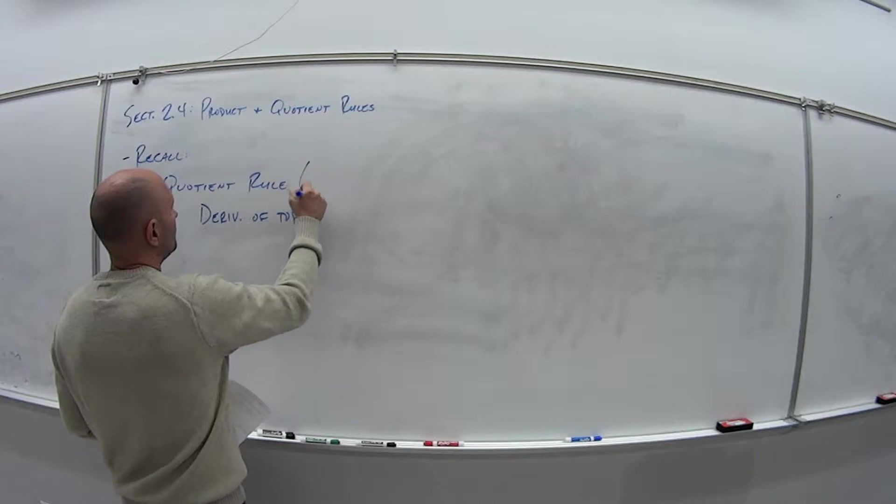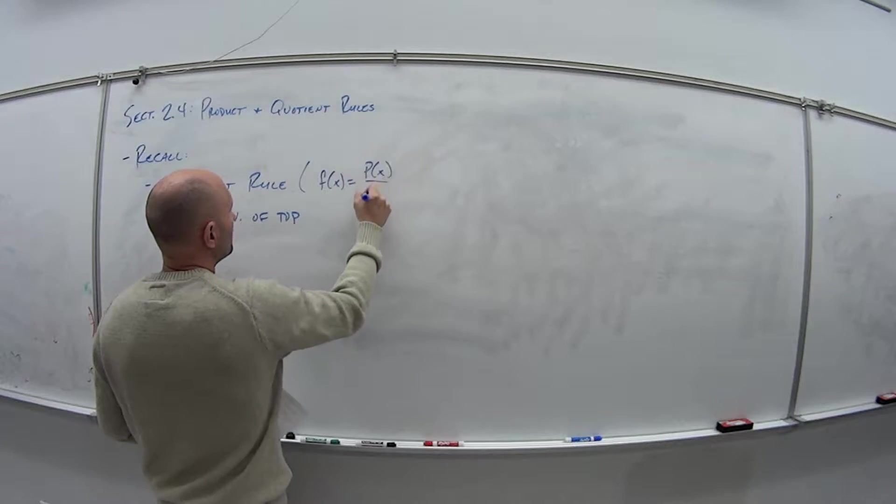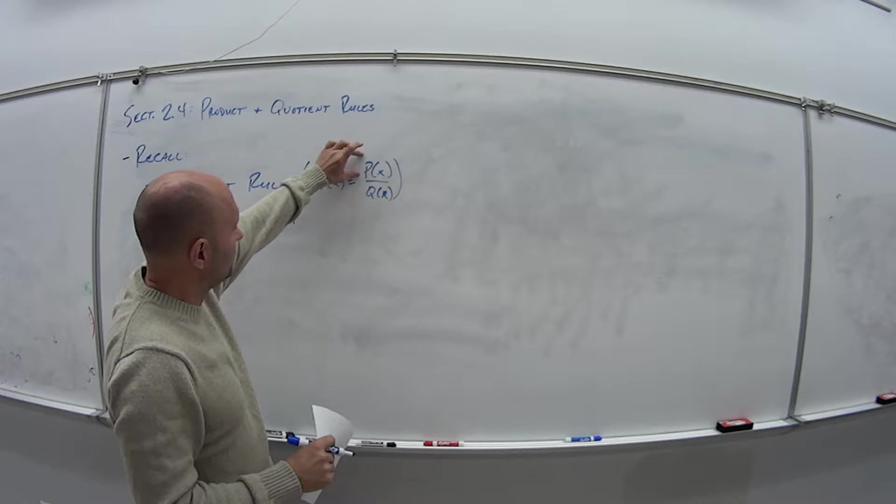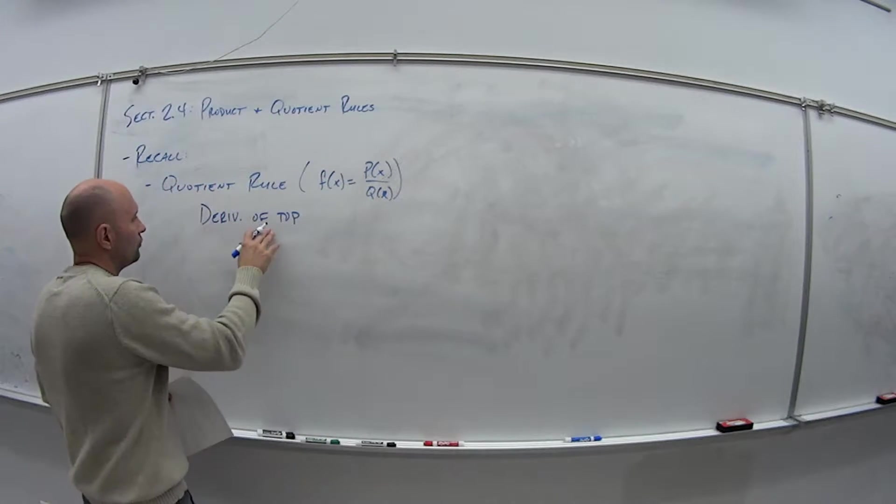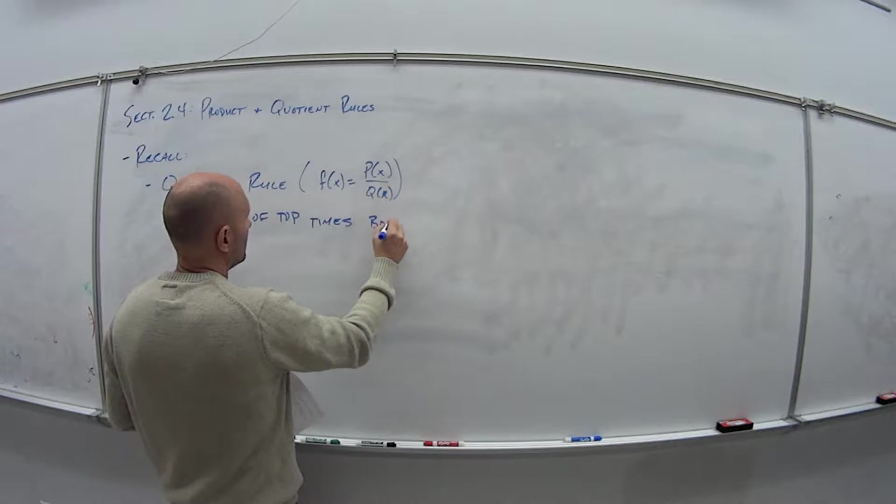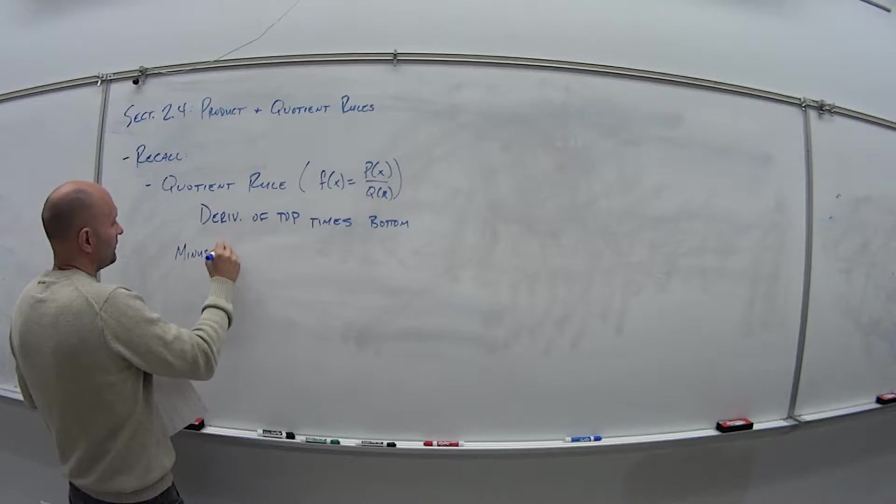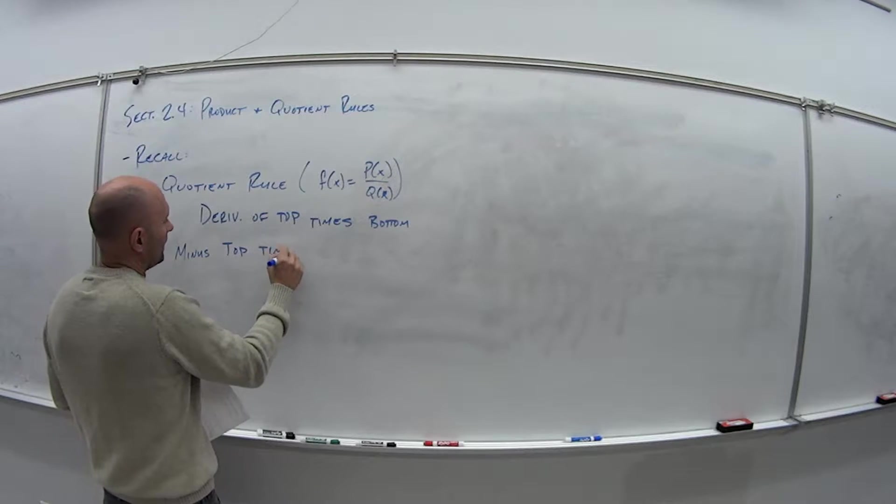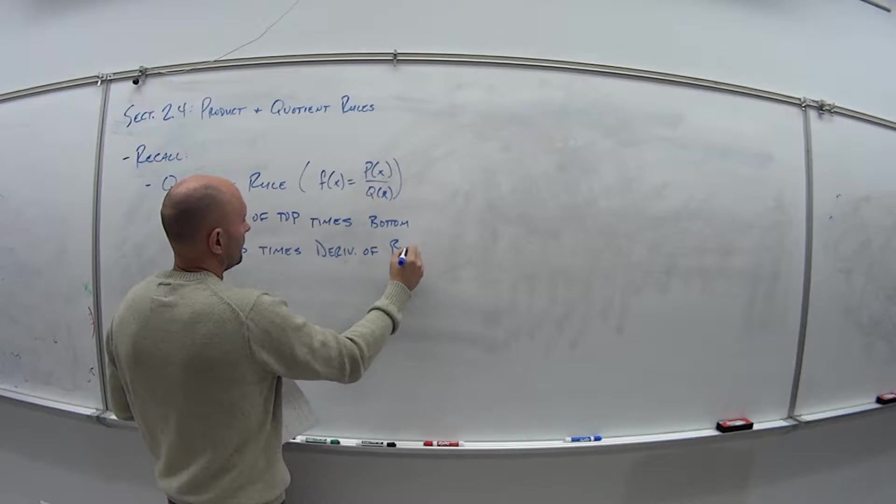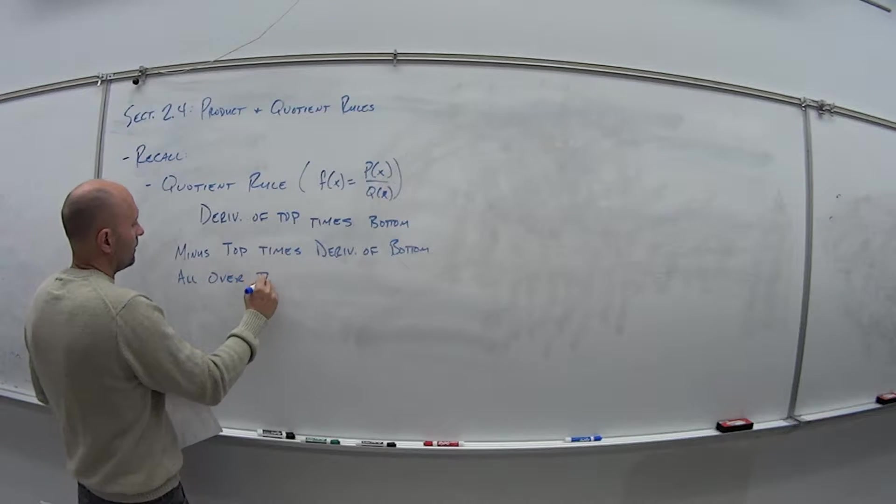So the quotient rule, just as a reminder, this is when we have f(x) is equal to some function in the numerator and some function in the denominator. So when I'm talking about top and bottom, it's the top piece or bottom piece. So derivative of the top times the bottom minus the top times the derivative of the bottom all over the bottom squared.